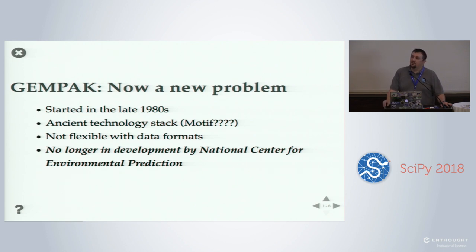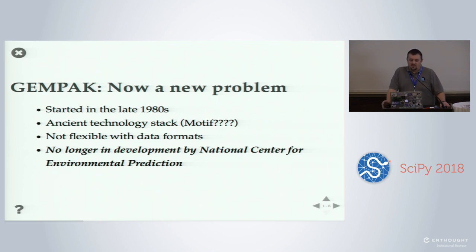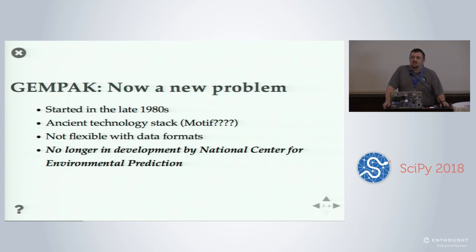GEMPACK's data model is flexible and gives a lot of power, but you have to do a lot — especially if you want to use it for research applications. If you've got some arbitrary data you've been working with, getting it into GEMPACK is, especially for the average meteorologist, nigh impossible. If you're really dedicated you could get in there and hack the Fortran or C and get it working. The big problem with GEMPACK these days is that the National Weather Service and the National Center for Environmental Prediction have moved on to new tool packages, so they are no longer developing GEMPACK, leaving a lot of legacy code that has to be picked up by the community.